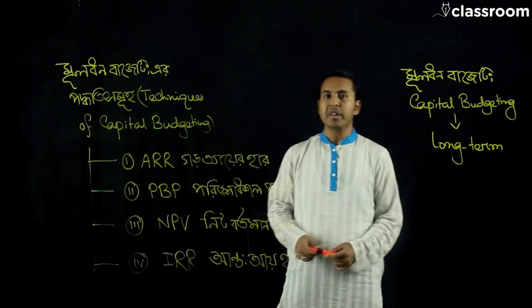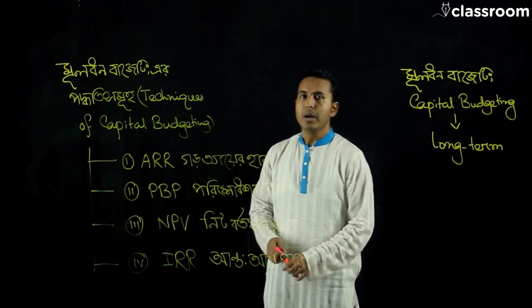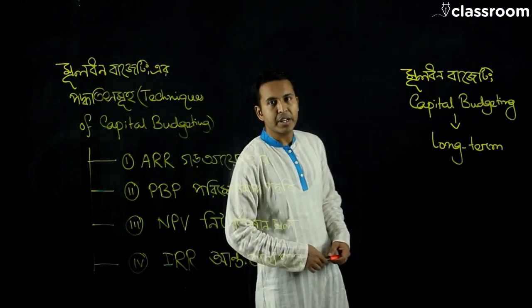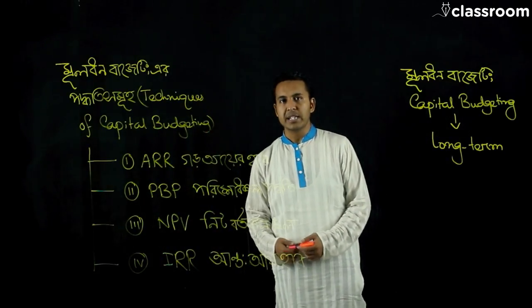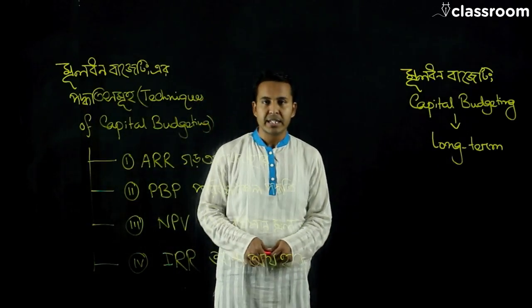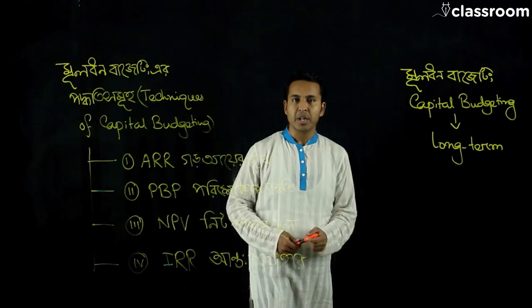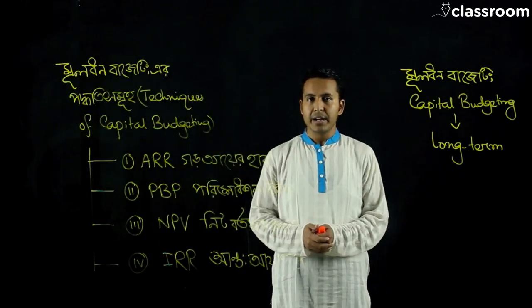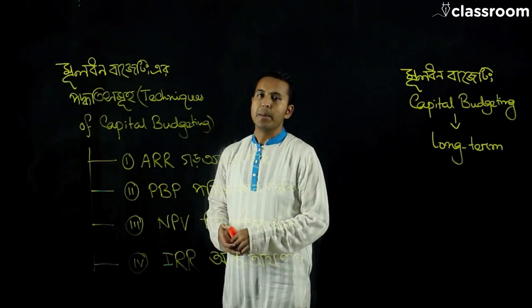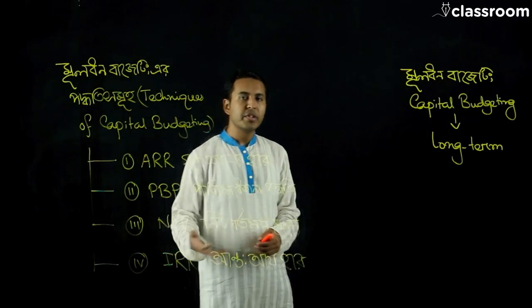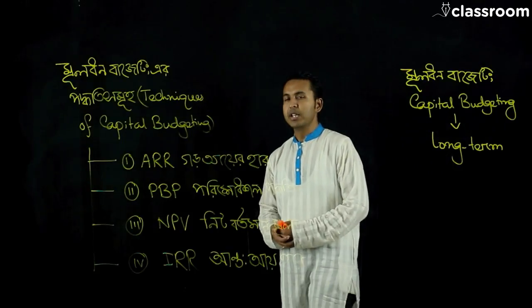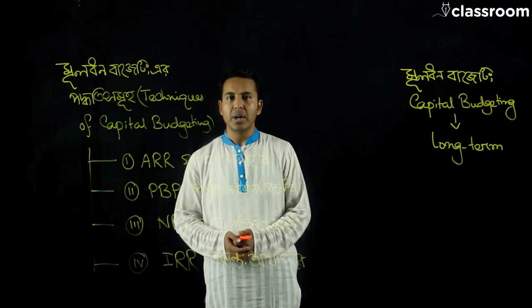The long-term investment decision is known as capital budgeting. The four techniques of capital budgeting are: ARR (Average Rate of Return), Payback Period (PBP), NPV (Net Present Value), and IRR (Internal Rate of Return).